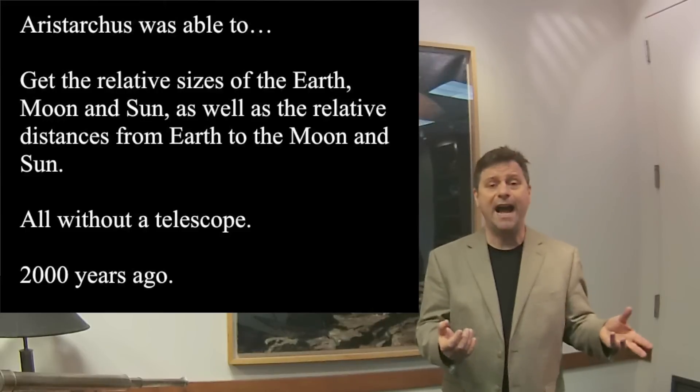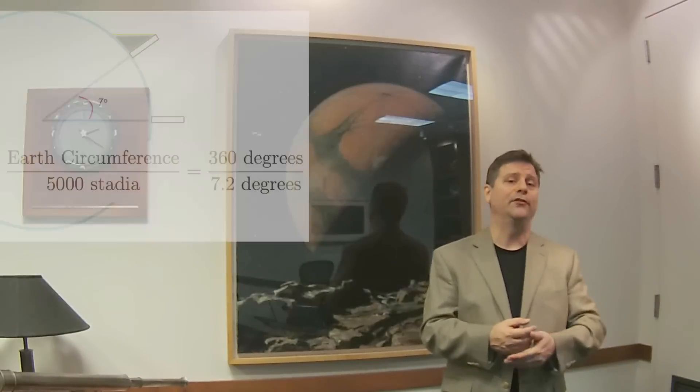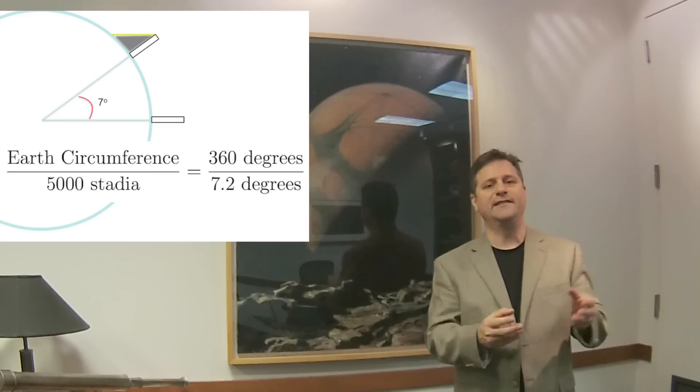So how did he do this? He did this all by eye and by hand. Remember his contemporary actually knew the size of the earth. So we can actually use that and plug that in later in order to get the actual sizes of the sun and the moon, according to Aristarchus.